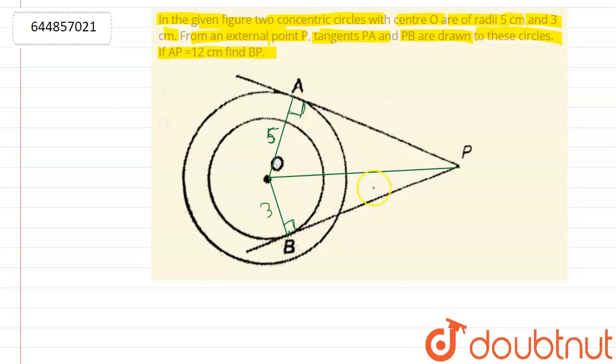So now here this is a right angle triangle because here I have drawn perpendicular from the tangent, and we know that from the tangent to the circle point makes 90 degrees. Now here it is given that AP is equal to 12 cm and we have to find BP.